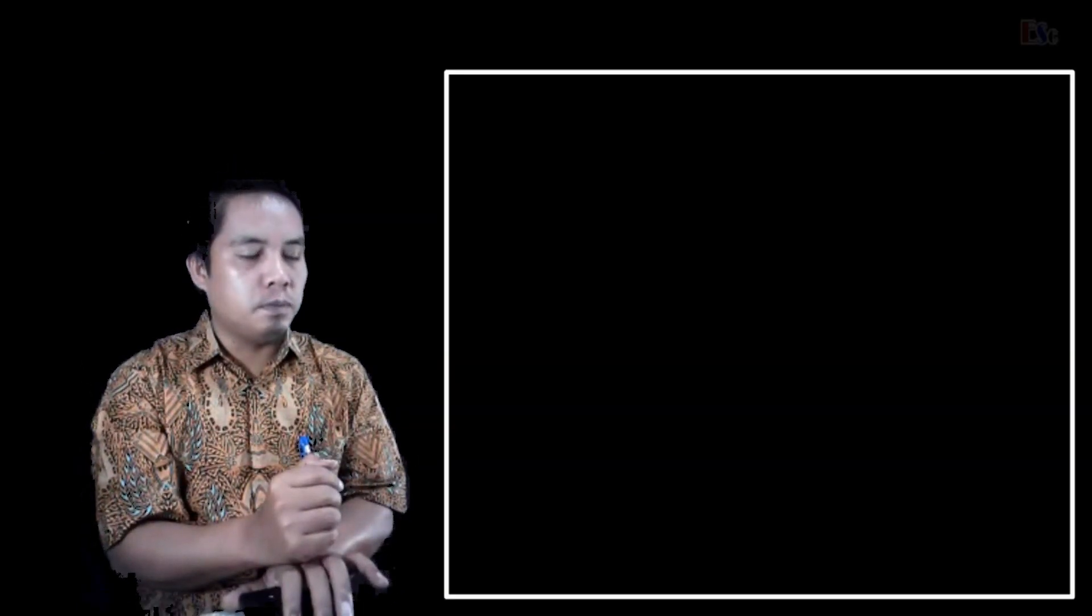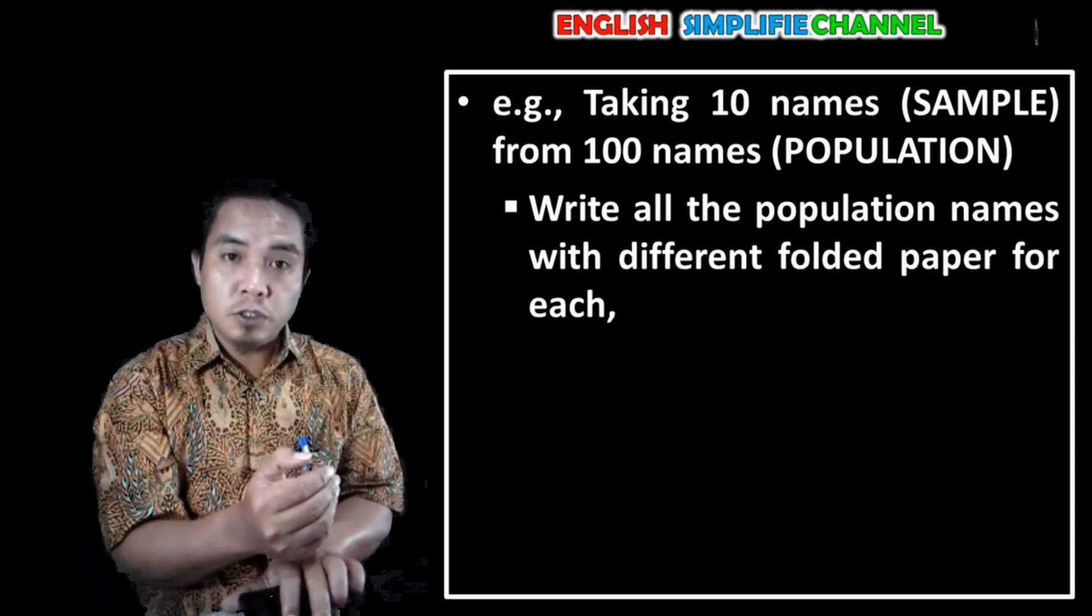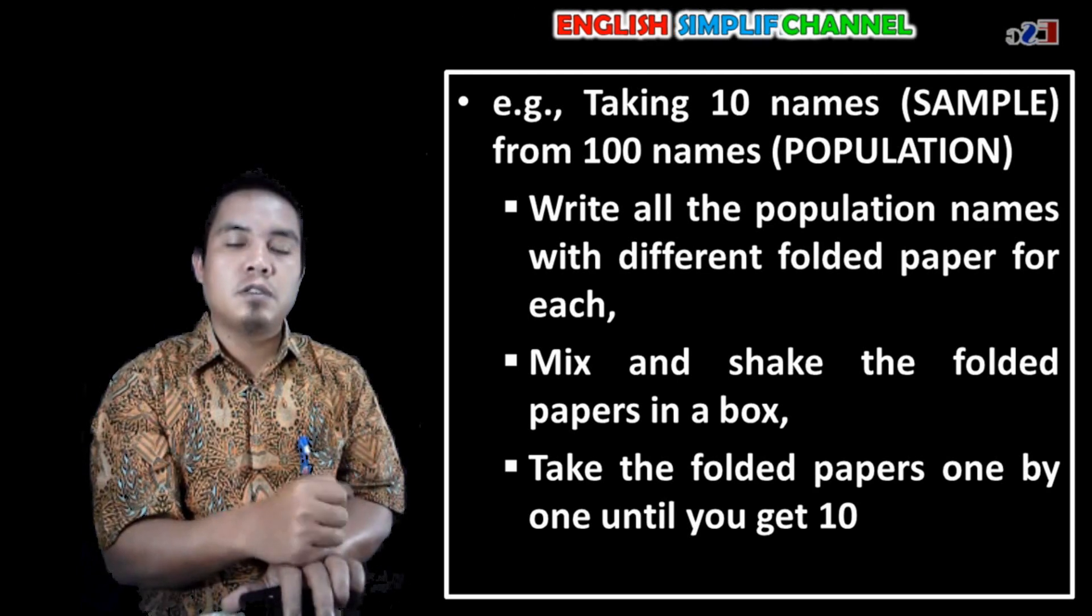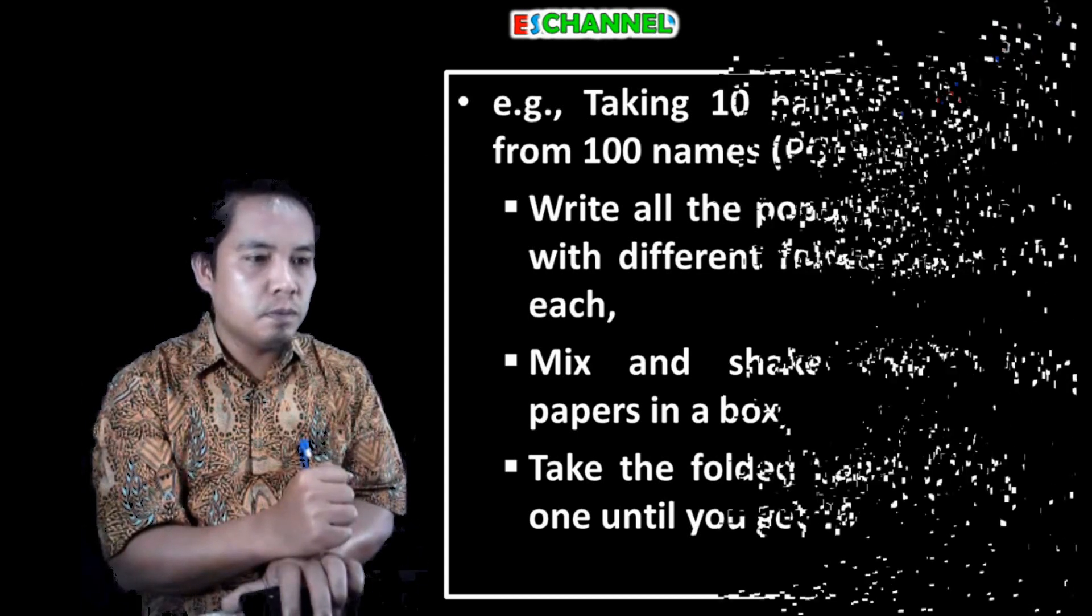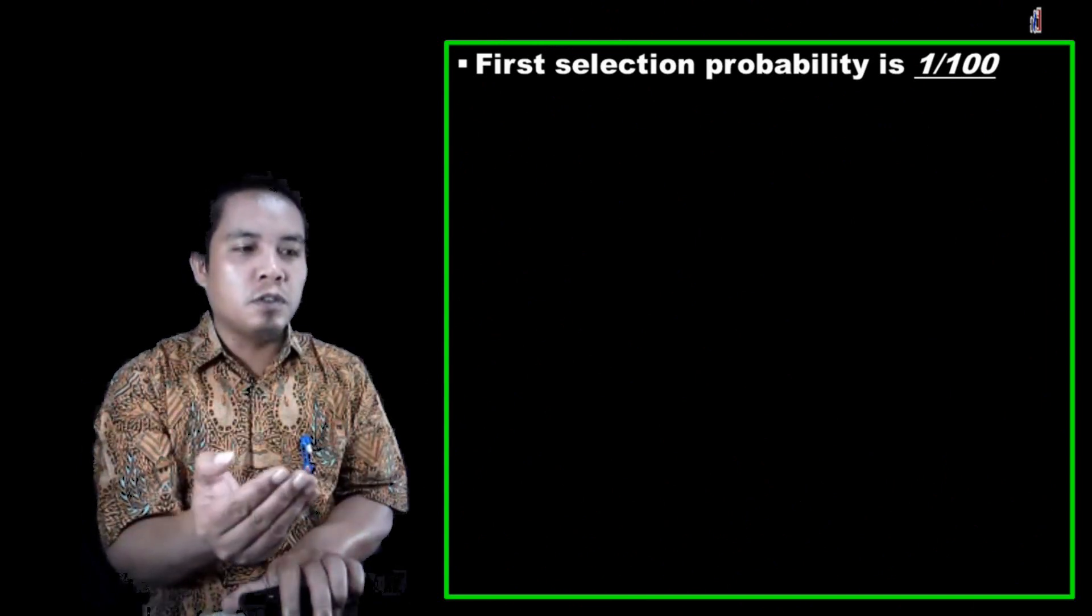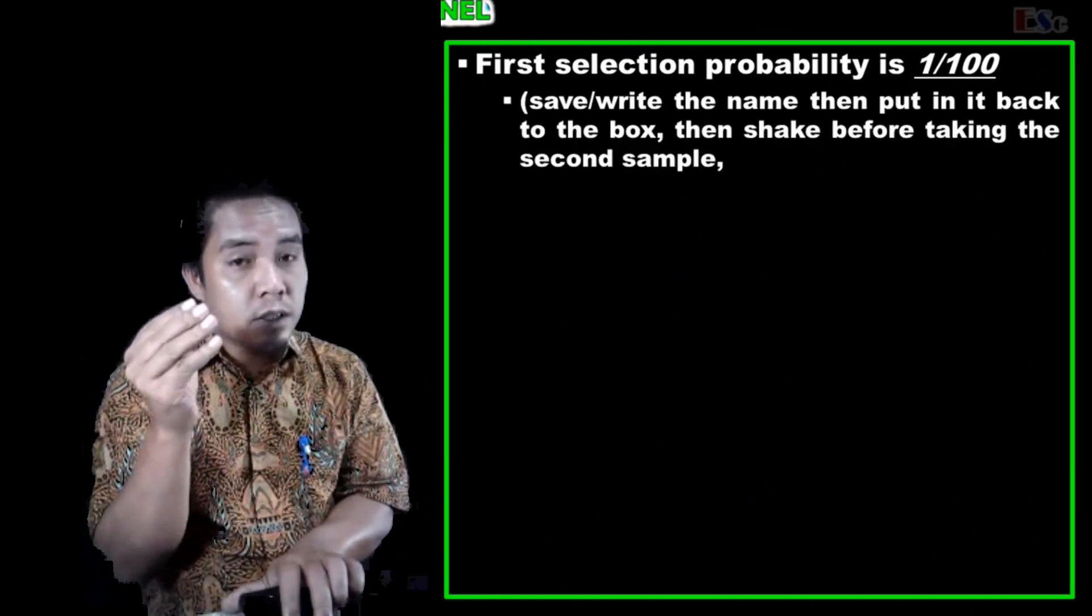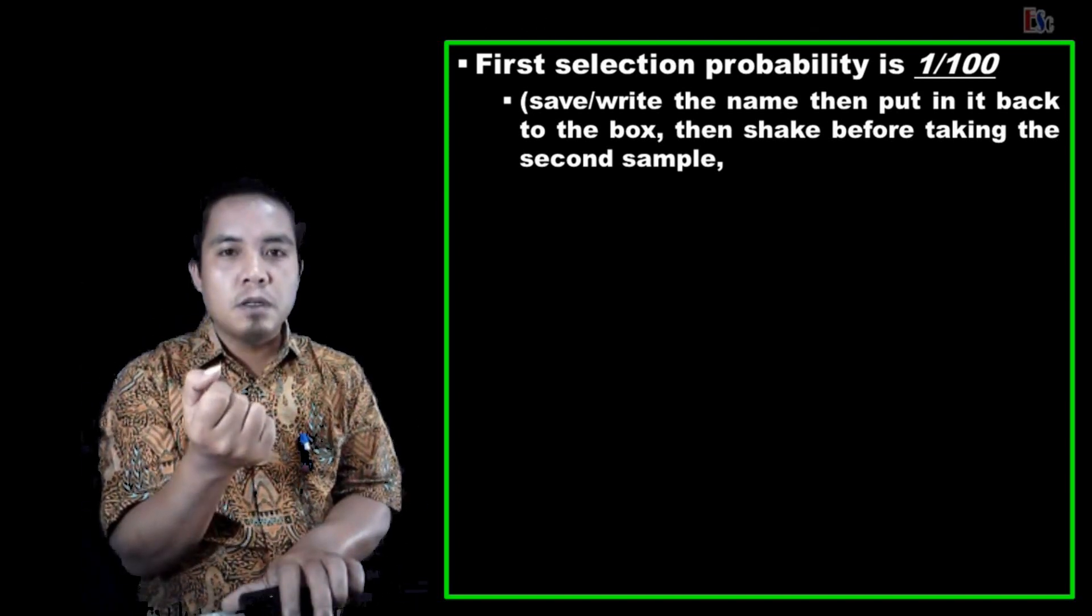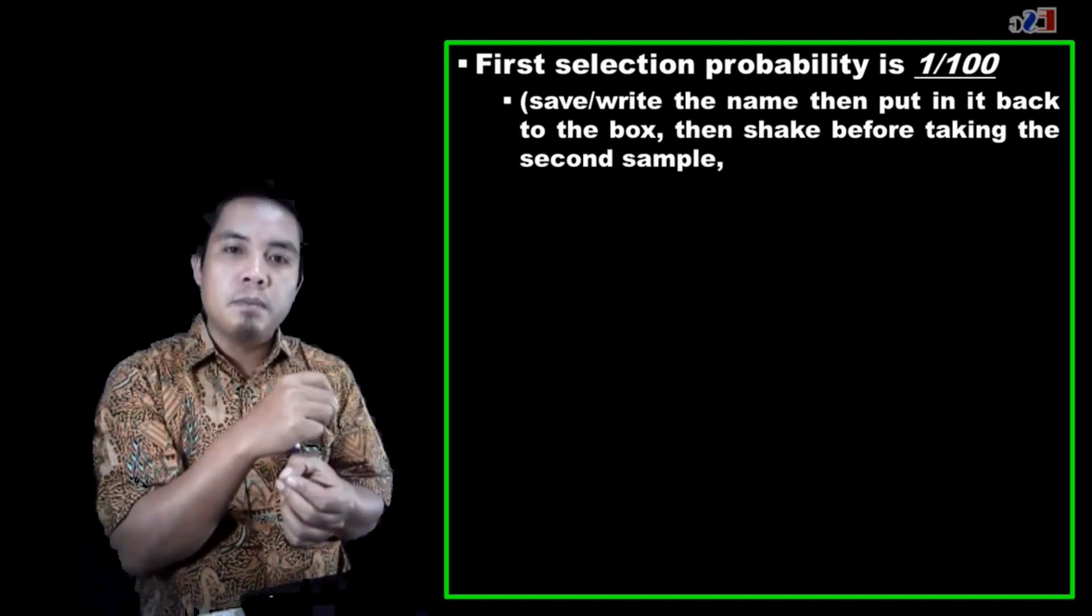So this is it. Example: again, we follow the procedures. The procedures in the beginning are just similar, but the next step is different in which the first selection probability is 1 per 100. Then after taking the sample, the first sample, open it, write down the name, save it first.